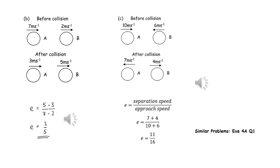In example 1c, again we can apply Newton's experimental law or Newton's law of restitution. We just need to be careful because the objects are going towards each other before they collide and away from each other after they collide, so the separation speed of the two objects is seven plus four and the approach speed of the two objects is ten plus six, giving us the value of E being 11 over 16.